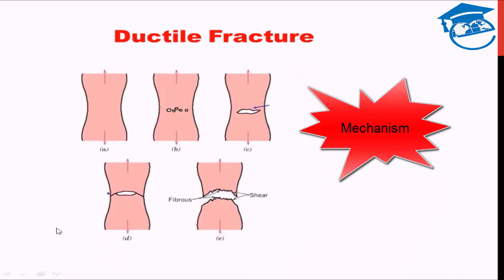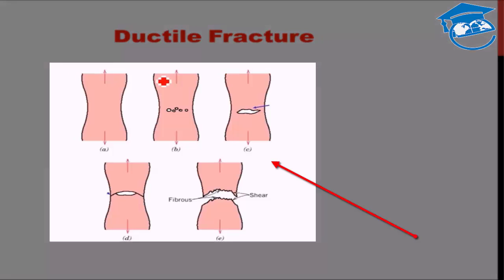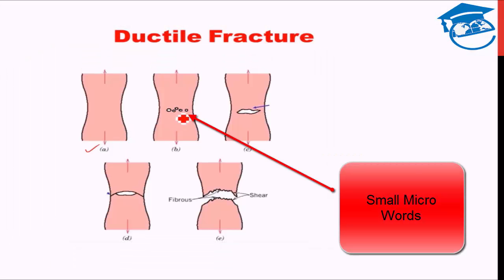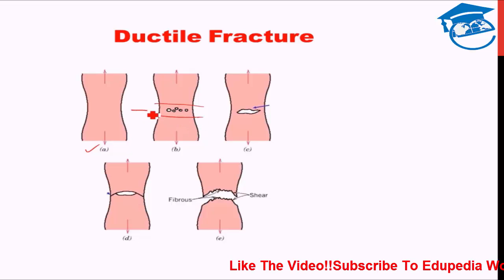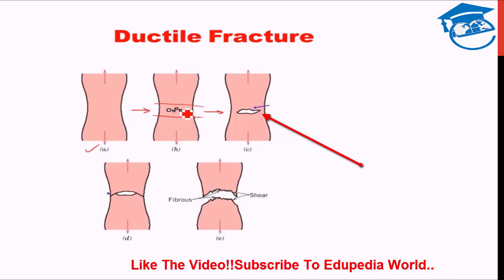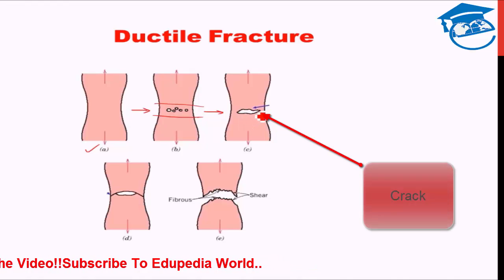Let us see the mechanism of ductile fracture. When you apply the load, initially it goes into creating a neck — neck formation takes place as stage one. Beyond that, small micro voids start appearing at the central region, in the area where the neck has formed. These micro voids can be observed under a microscope. The third stage is coalescence of those micro voids, where they come together and become sufficiently large to form a proper crack.